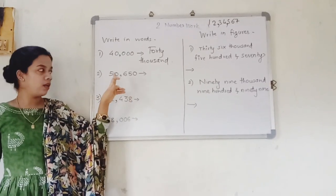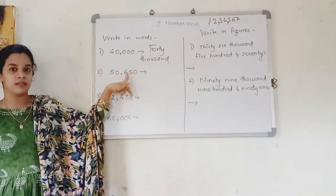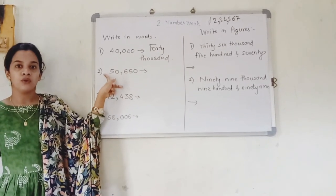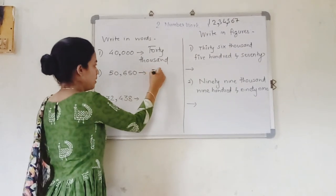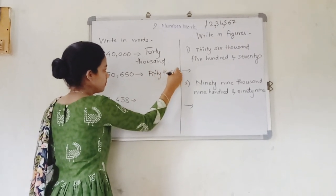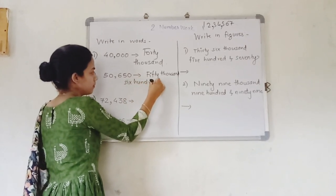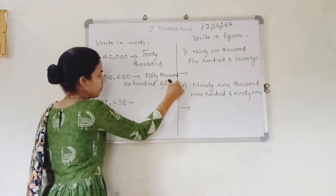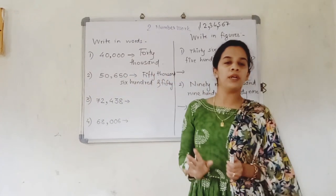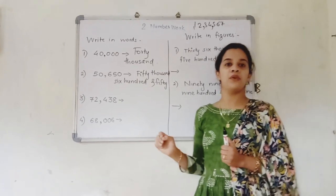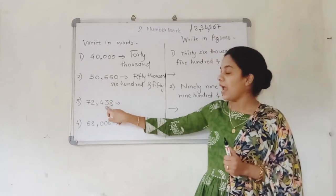Here the number is 50,650. If you observe: this is units, this is tens, this is hundreds, this is thousands, this is ten-thousands. So it is fifty thousand six hundred and fifty. Just focus on the next number — can you see how easy it is because of the comma? It is 72,438.